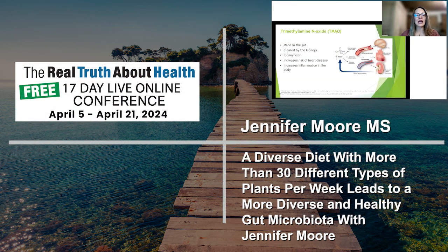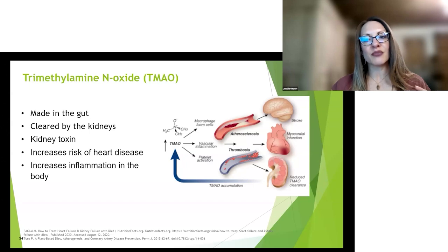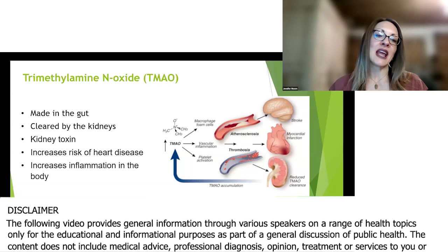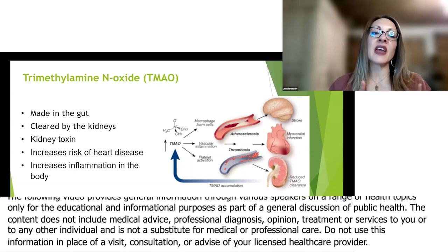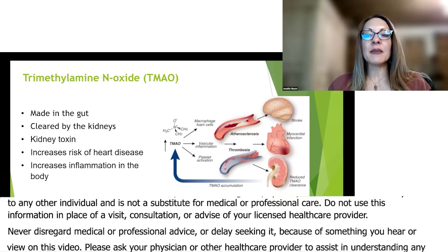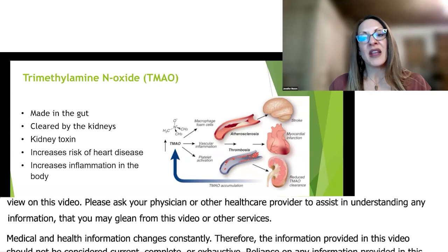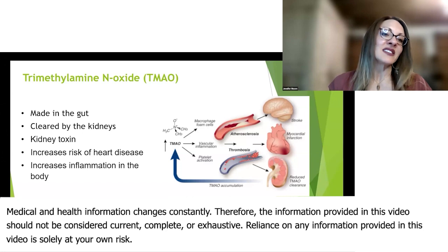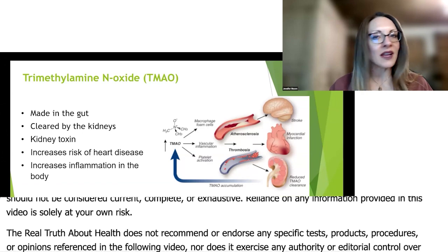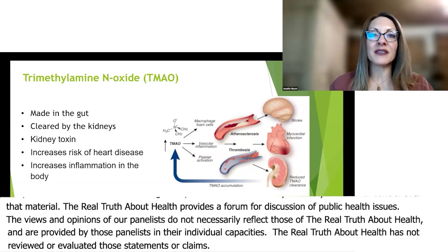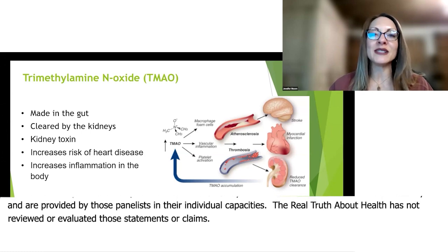Let's talk about kidney toxins - specifically TMAO. It's made in the gut and cleared by the kidneys. With ingestion of carnitine and choline, things found in red meat, poultry, eggs, and fish, your body produces TMA, which then goes through the liver and is converted into TMAO. TMAO is a kidney toxin and it also increases the risk of heart disease. You want to decrease the production of TMAO not only for your kidneys but also for your heart.